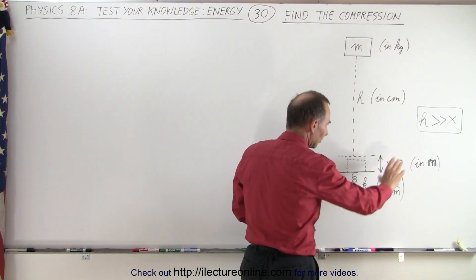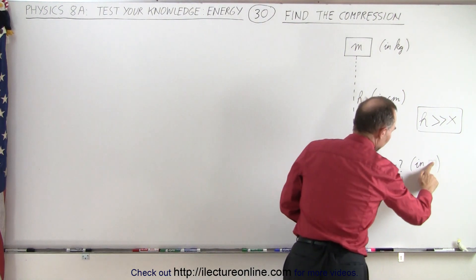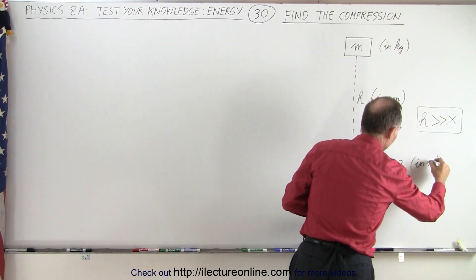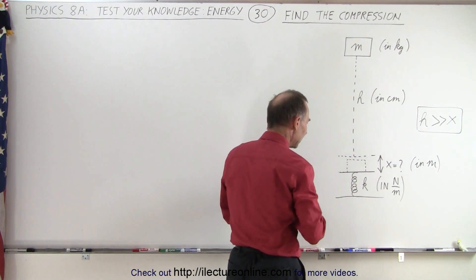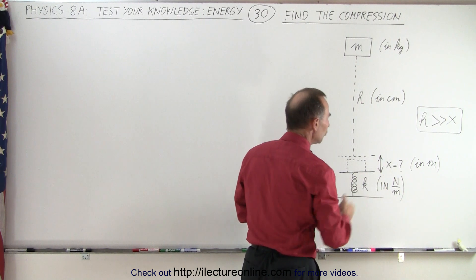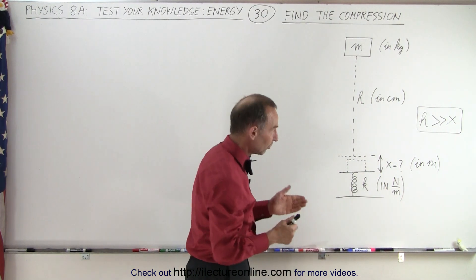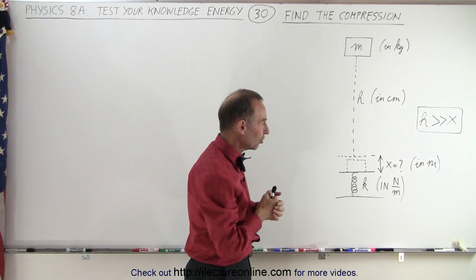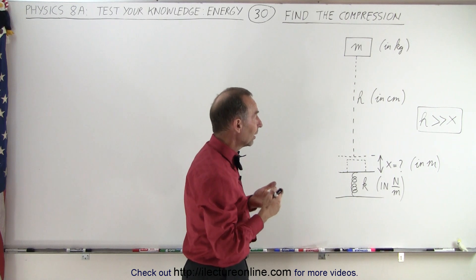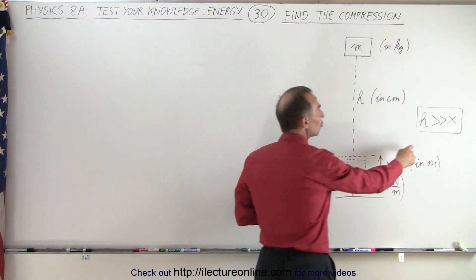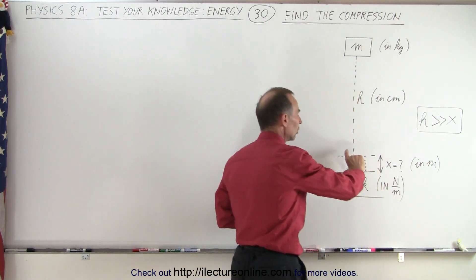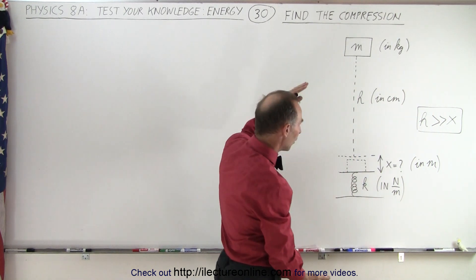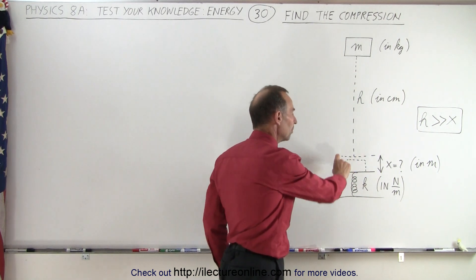It compresses the spring at distance x in meters, and I guess I should use the correct symbol, meters, like this, and the spring constant is in newtons per meter. So the question is, what is the compression x in meters, understanding that h is much, much greater than x, so we can ignore in the overall height differential that small amount of x.